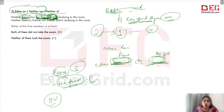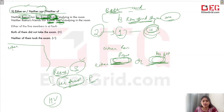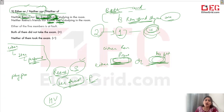Isko yaad karne ki ek technique hai — 'itra' yaad karo, jaise perfume. Perfume ki wajah se everybody gets attracted to you physically — physical proximity ka concept. Usi tarah either/or aur neither/nor mein, jo physically paas hai helping verb ke, uske according aapka helping verb hoga. Toh exam mein bhulo na — either/or aur neither/nor ka yeh rule. Also, either/or is used for two things — 'either of five members' nahi aayega; 'any of five members' hoga. Either sirf do cheezoon ke liye use hota hai.